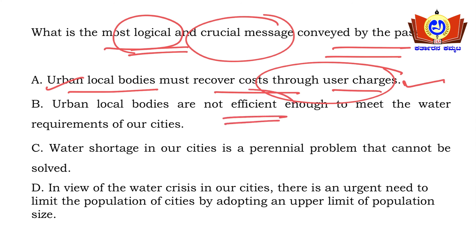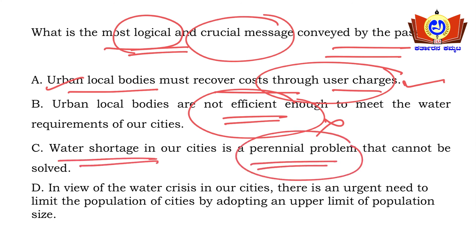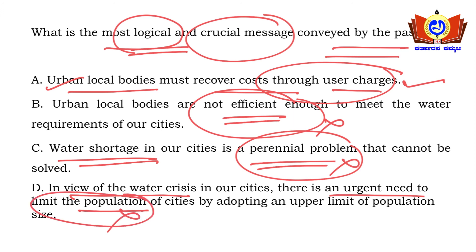Option A — urban local bodies must recover cost through user charges — is the most logical, since fetching and treating water has a cost. Option B — urban bodies are not efficient — is wrong. Option C — water shortage is a perennial problem — is wrong. Option D — limit population — is wrong. Eliminate by checking what the passage actually addresses. Option A is the right answer.